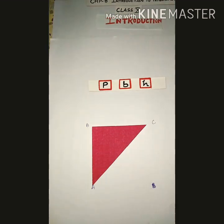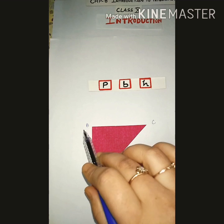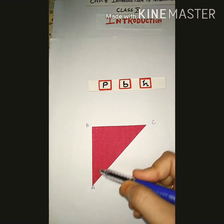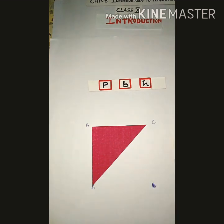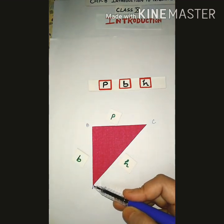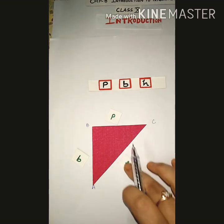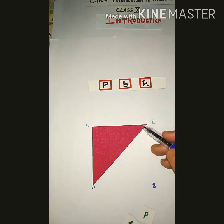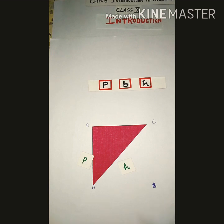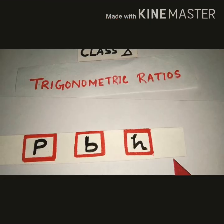Now I have rotated the triangle. These two are the acute angles and this is the 90-degree right angle. If I consider angle A, the side opposite to angle A will be our perpendicular, the longest side is our hypotenuse, and the side adjacent to angle A will be our base. If I consider angle C, the side opposite to angle C will be our perpendicular, this is obviously the hypotenuse, and this will be our base.